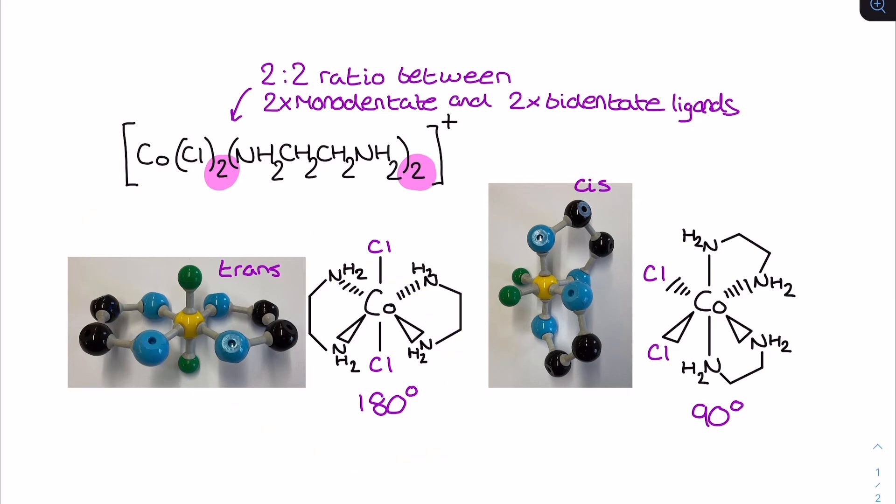What about the cis one? Well, the cis one actually carries something very special to it as well, that I'll mention right at the end of this. First off, though, why is this the cis stereoisomer? Well, it's the same structure. I've got this 2 to 2 ratio between the two monodentate and the two bidentate ligands here. But notice, the two monodentate ligands of the same type are once again, as we saw before, 90 degrees apart, which makes this the cis stereoisomer.